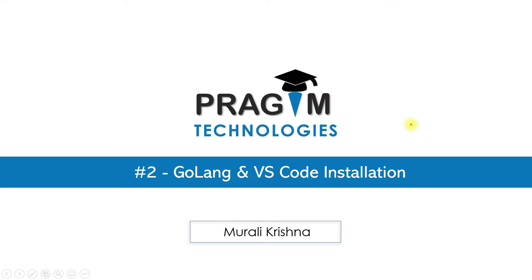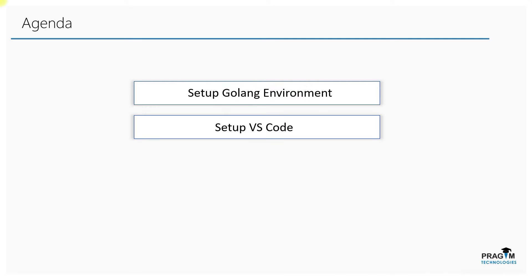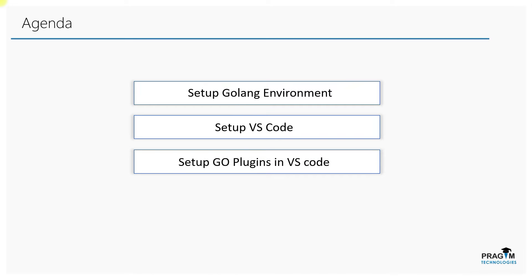Hello, welcome to part 2 of the Golang series. Today in this session, we'll see how to set up the Go compiler on our local PC. Also, we'll see how to set up Visual Studio Code with all the required plugins that make our development with Golang a lot easier.